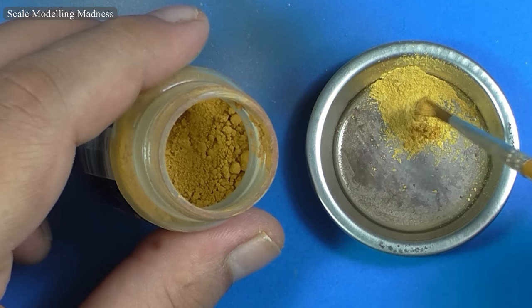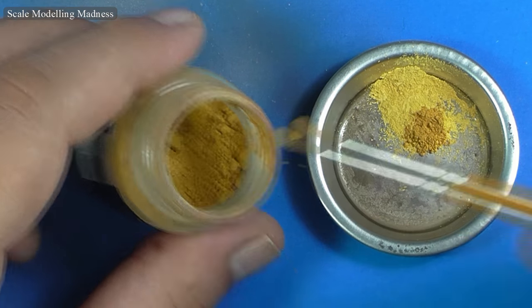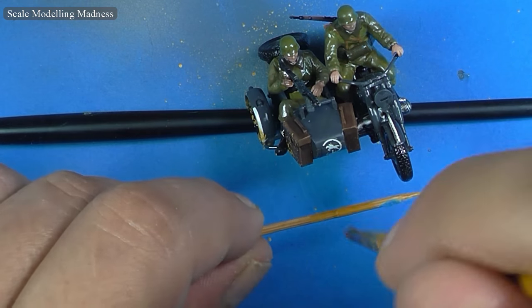And lastly, using the same mix of pigments that I used for the tank, well more or less, I add some mud splatters on the motorcycle.